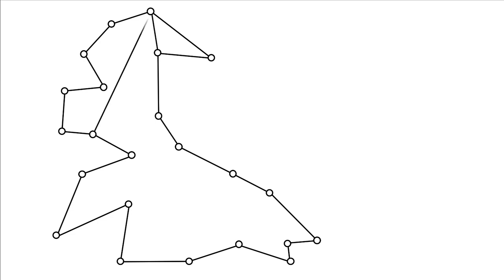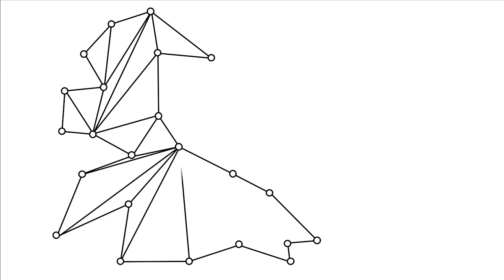First, triangulate the polygon without adding extra vertices. The vertices of the resulting triangulation graph can always be three-colored.